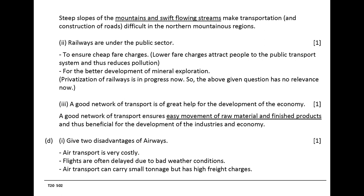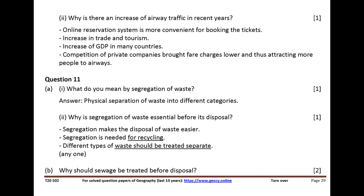Give two disadvantages of airways. Air transport is very costly. Flights are often delayed due to bad weather conditions. Air transport can carry small tonnage but has high freight charges. Why is there an increase of airway traffic in recent years? Online reservation system is more convenient for booking tickets. Increase in trade and tourism. Increase of GDP in many countries. Competition from private companies brought fare charges lower, thus attracting more people to airways.